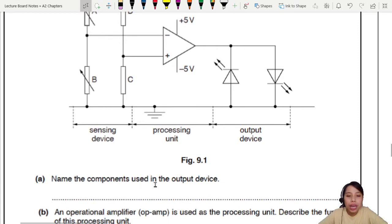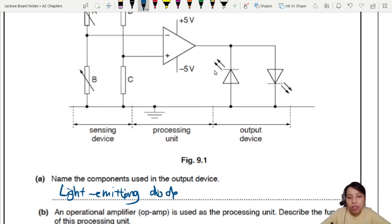Name the components used in the output device. What is this one? This one is LED. Diode, but with arrow come out. So we're going to write here, light emitting diodes. The mark scheme sometimes accepts if you write the short form, but it's just one mark. Just write the whole thing out. Bracket LED. To be safe, to be sure. So this is one mark by itself.